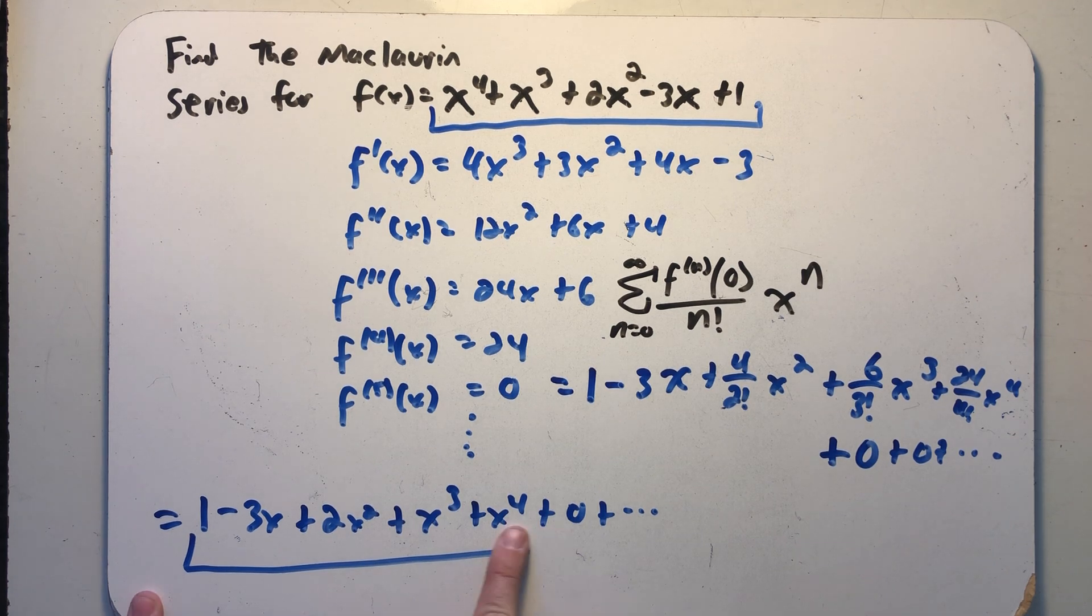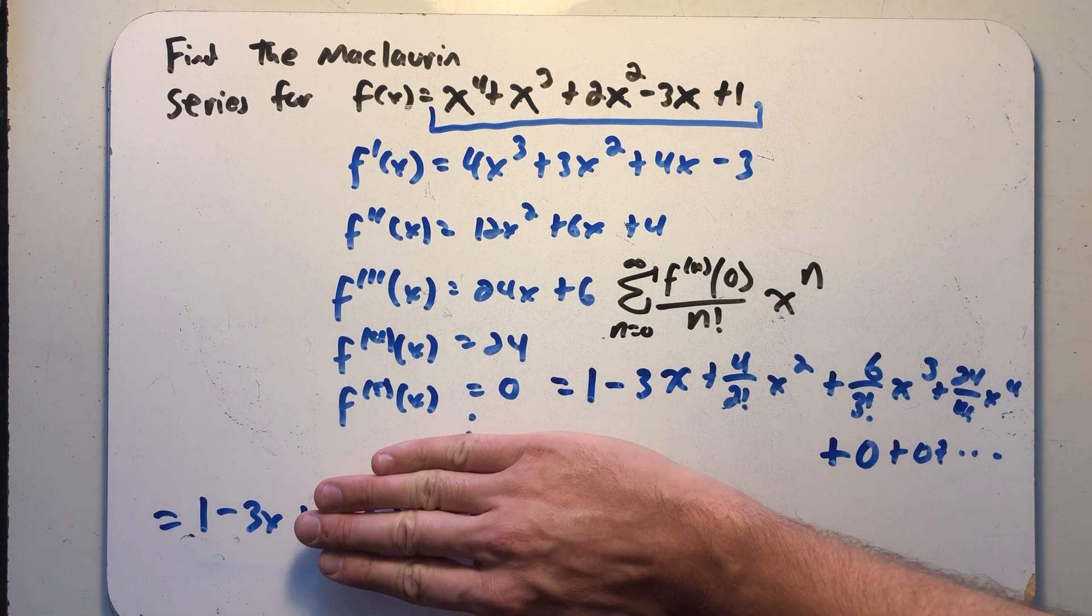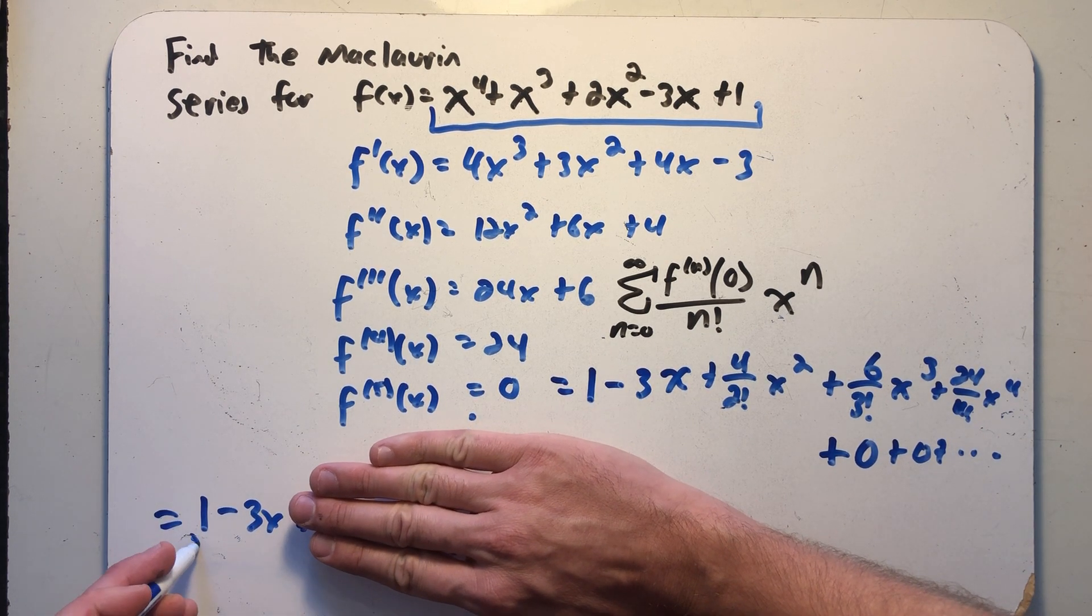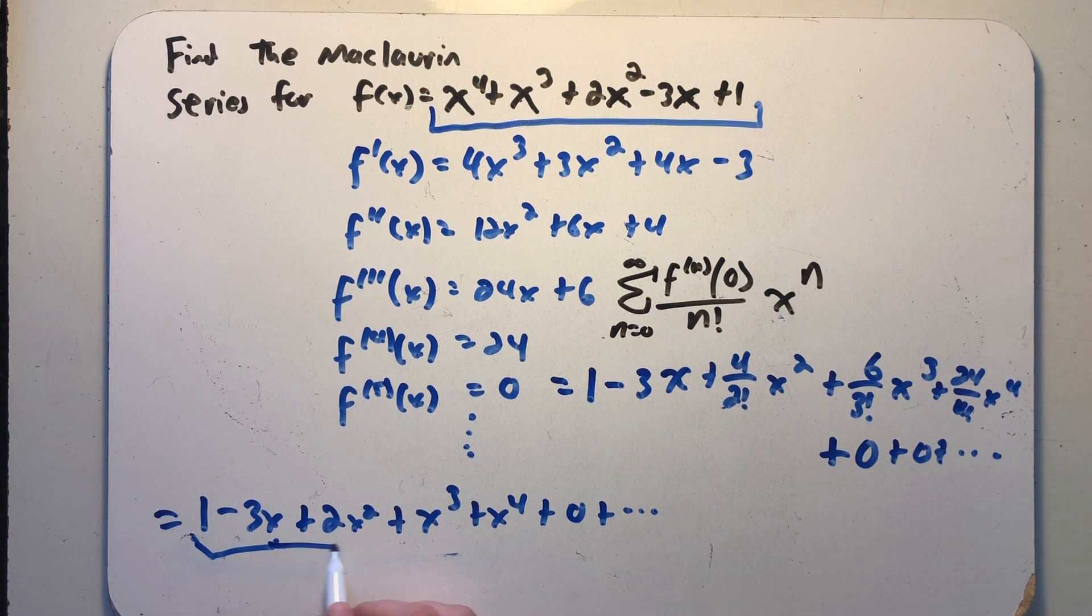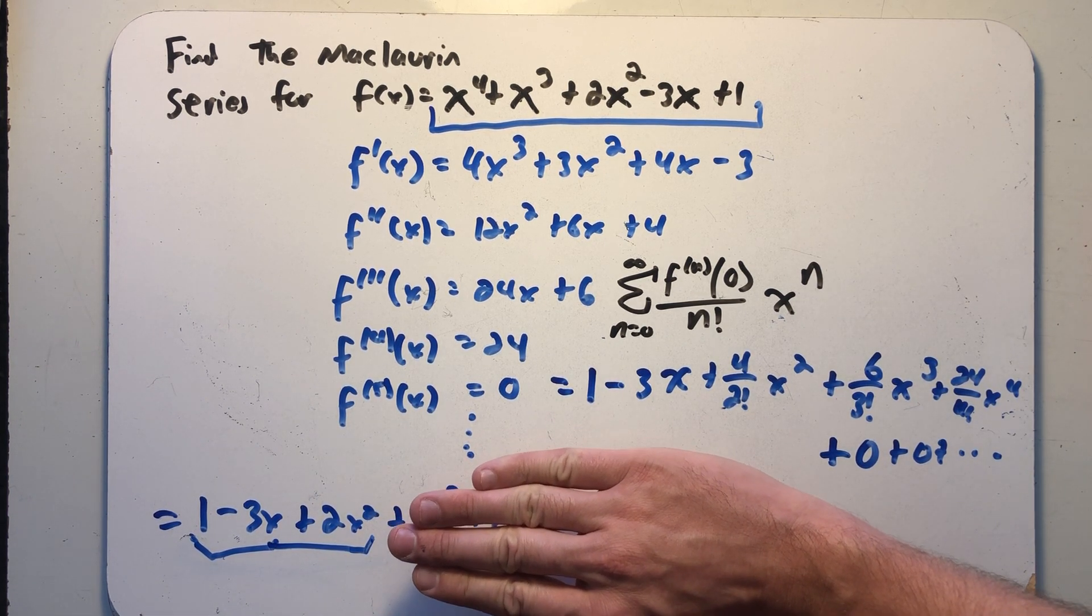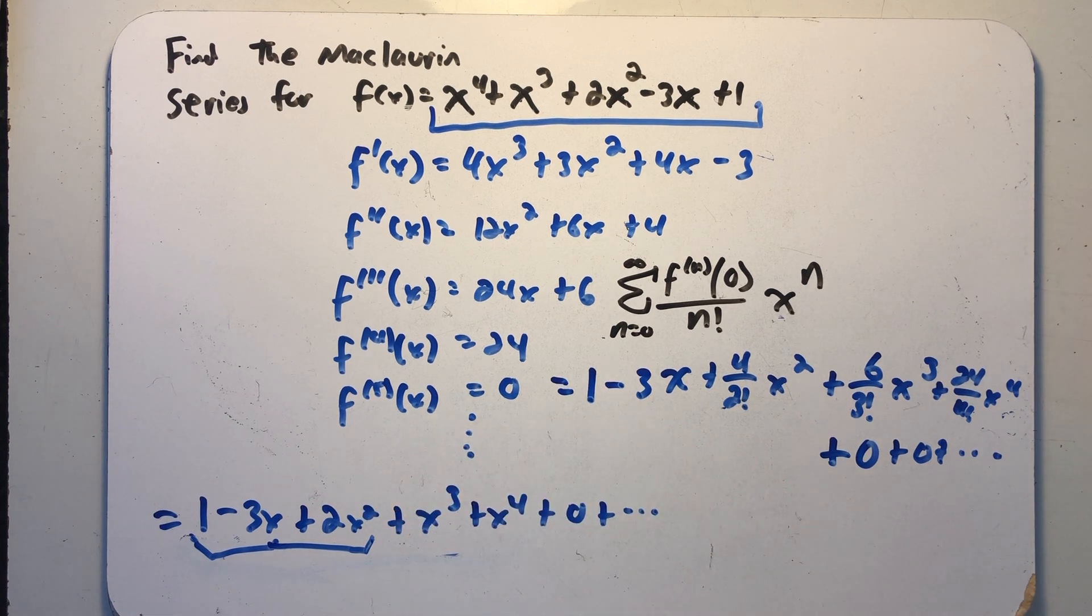One neat thing to look at would be a Taylor polynomial. The first degree Taylor polynomial, that's our linearization of the function at zero. We could think of the second degree Taylor polynomial as a quadratic approximation of the function, so on and so forth. But that's it for now.